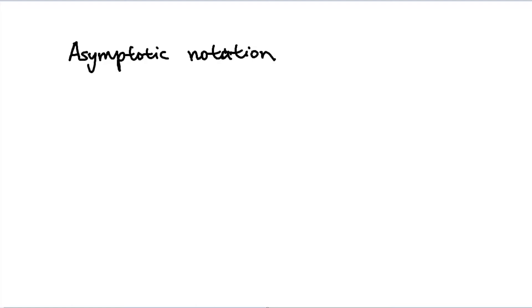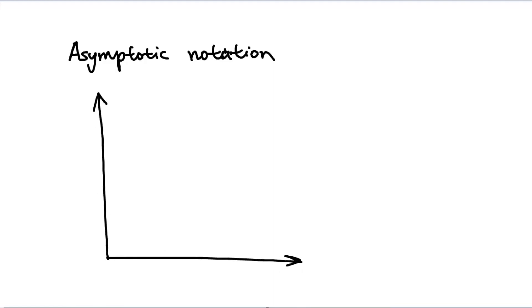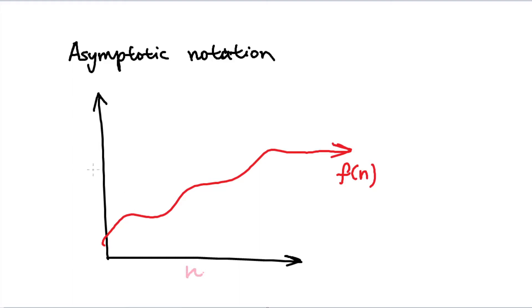And so let's go back to the concept of asymptotic notation. Let's take our graph and consider how we can simplify the way that we illustrate f of n — how we can simplify the description of our algorithm.